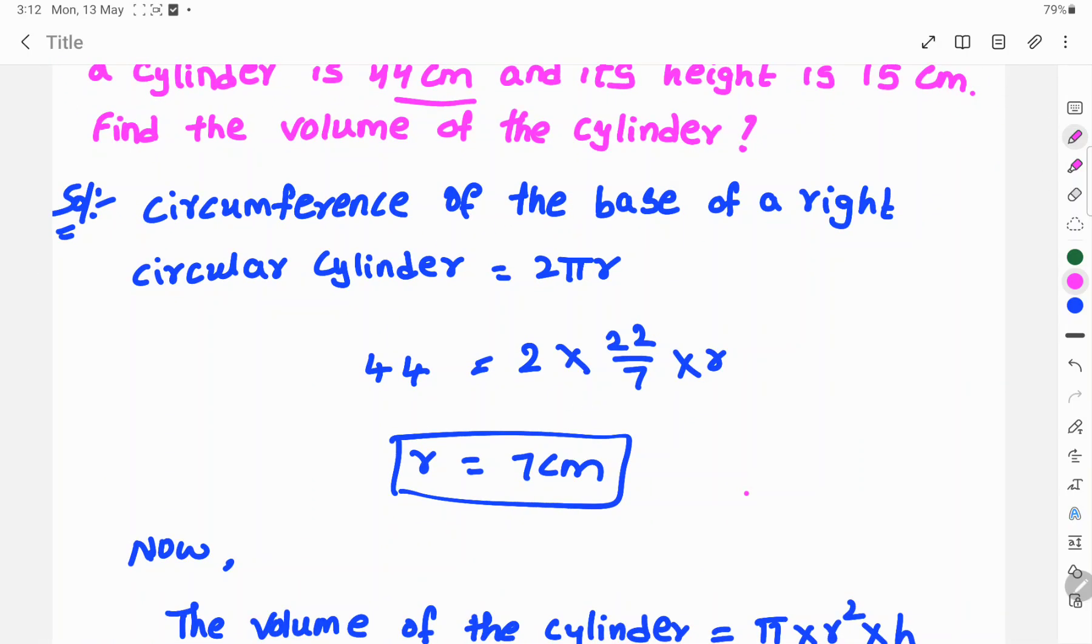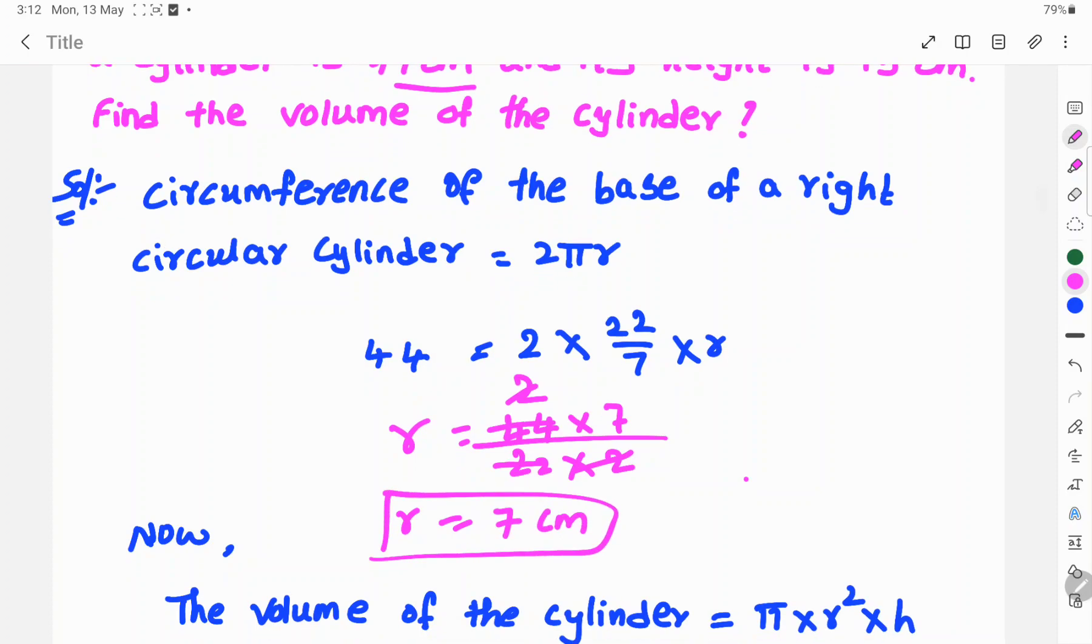So r equals 44 times 7 divided by 22 times 2. Here 22 cancels into 44 two times, giving us a radius of 7 cm.